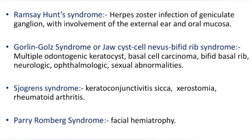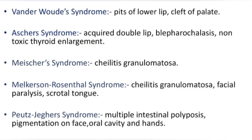Sjögren syndrome: characterized by keratoconjunctivitis sicca, xerostomia, and rheumatoid arthritis. Parry-Romberg syndrome: characterized by facial hemiatrophy. Van der Woude syndrome: characterized by pits of the lower lip and cleft palate. Ascher syndrome: acquired double lip, blepharochalasis, and non-toxic thyroid enlargement.